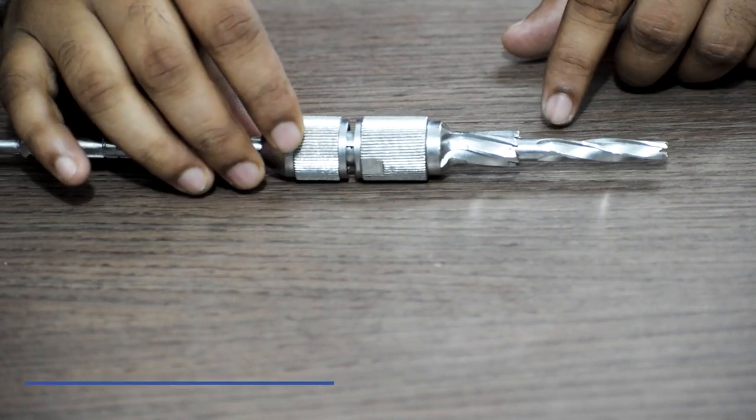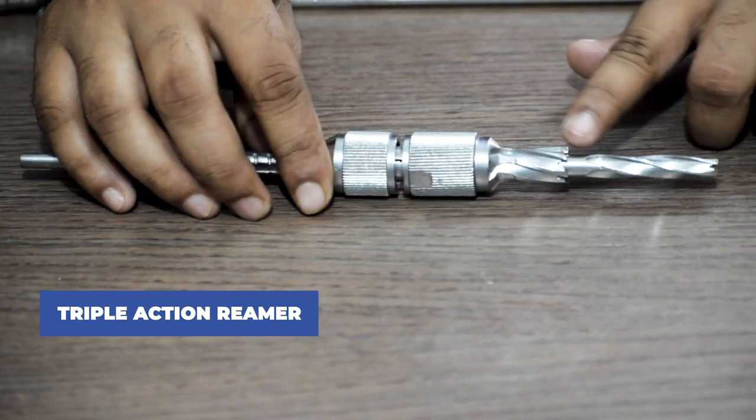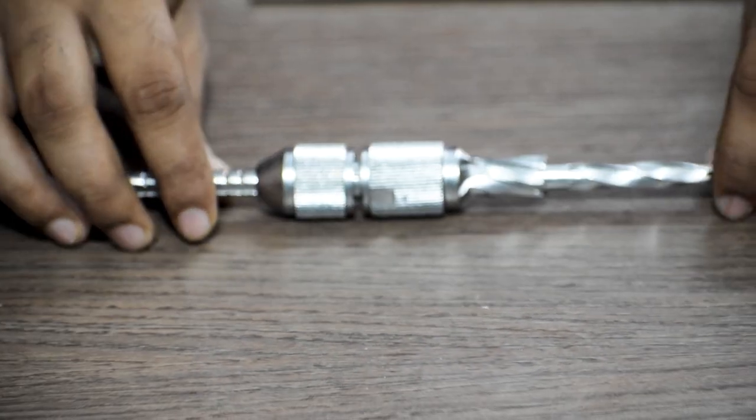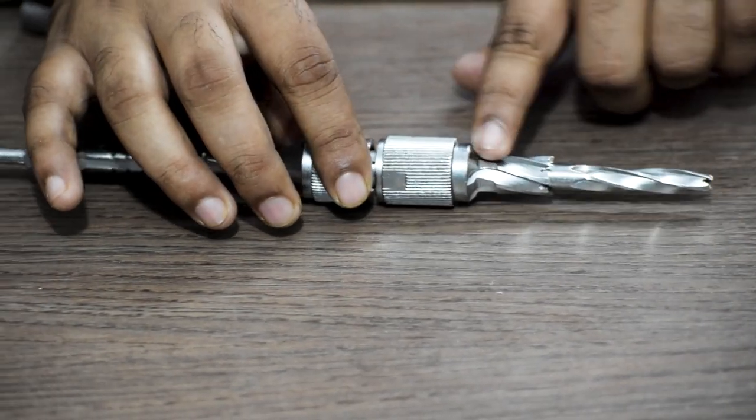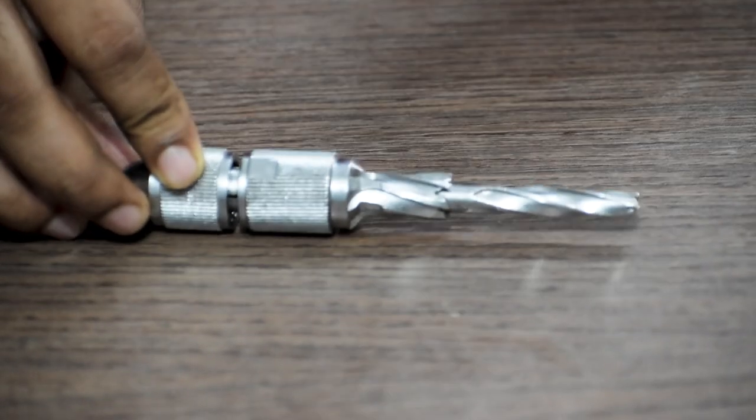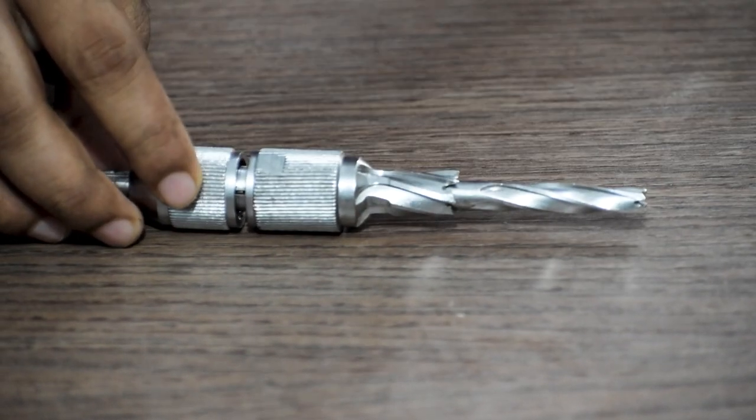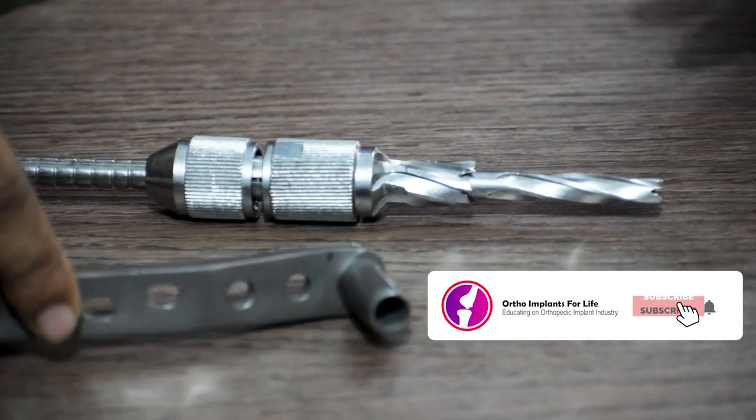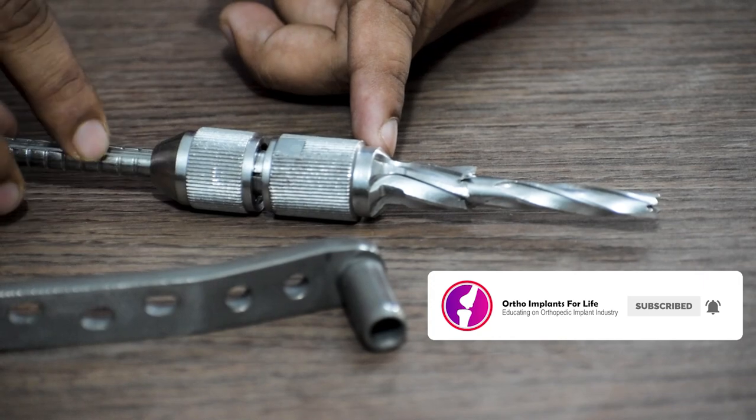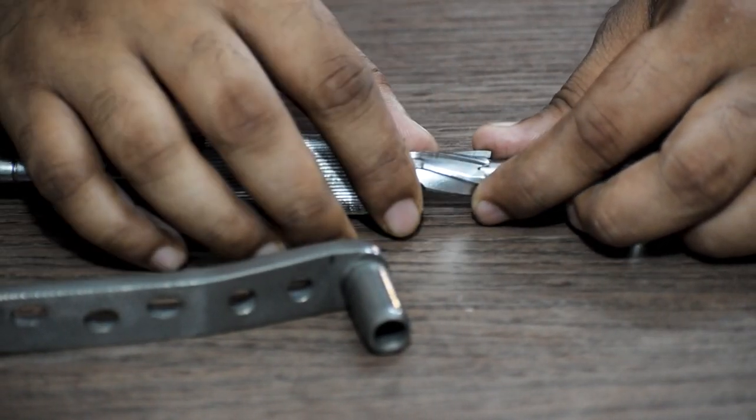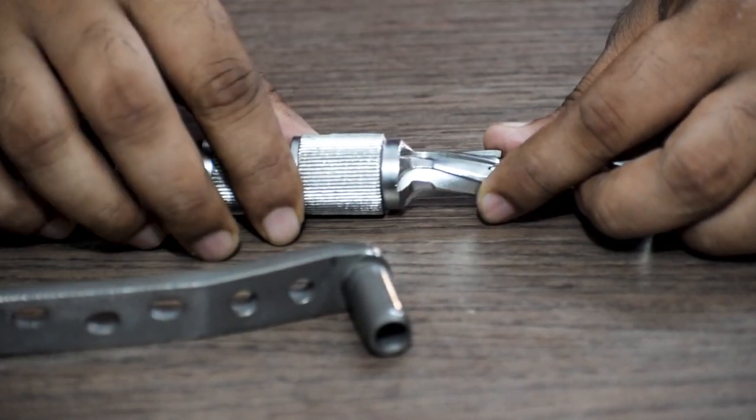Then we will require triple action reamer. This one is a little different from the triple action reamer which we use in DHS or dynamic hip screw. You can check the video here by clicking on the i button. This is also called a triple barrel reamer. DCS reamer is a fixed reamer. In case of DHS or dynamic hip screw, there are two types of triple action reamer: one is long barrel and one is short barrel. But in case of DCS, there is only one kind of reamer, which is this one.